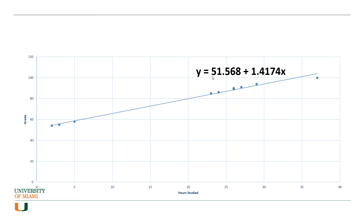Using this intercept and slope, you can predict the grade for any number of hours. For example, the predicted grade for somebody who has studied 20 hours would be 51.56 plus 1.4 multiplied by 20. Whatever that number is, that is the prediction of your OLS algorithm for the grade.